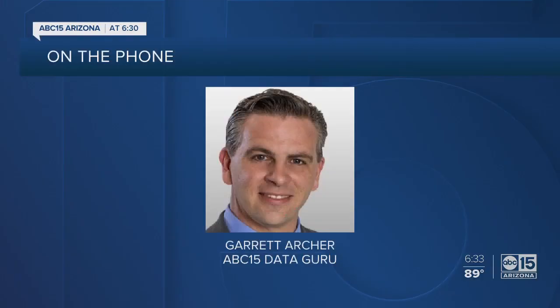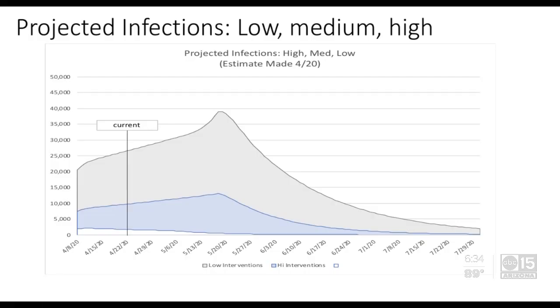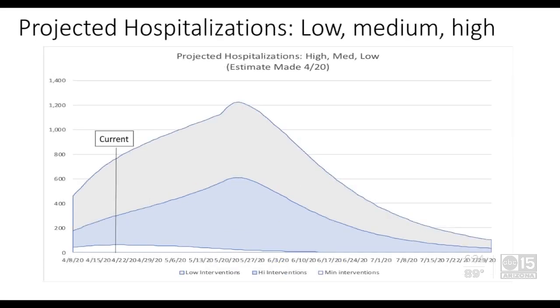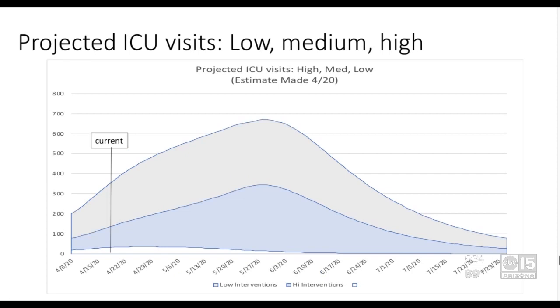We actually have a PowerPoint that we're going off of. This model appears to be very similar to the Imperial College London model that was first used in hotspots like Wuhan and Italy. It makes some assumptions — one being that symptomatic cases of COVID-19 is 18.5%, and that hospitalization cases are going to be about 16%, with a death rate of about 1.6%.